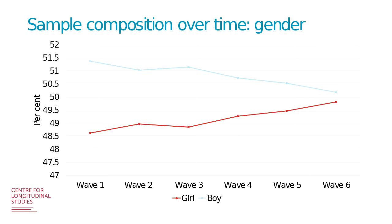Moving on to sample composition and what happens to it over time: here you can see what happens to the gender composition. The proportion of girls has increased while the proportion of boys has decreased, and this is caused mainly by differential response — parents of boys are less likely to respond to the survey for some reason. The number of boys has declined by about 1.5%, and the number of girls has increased by the same amount.